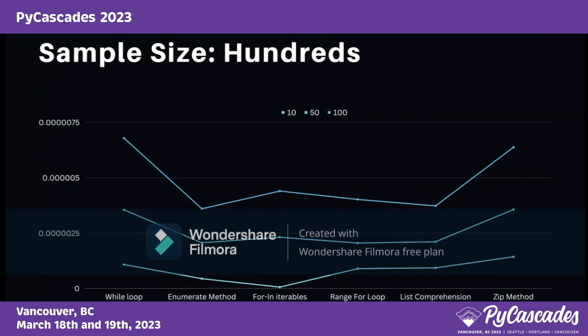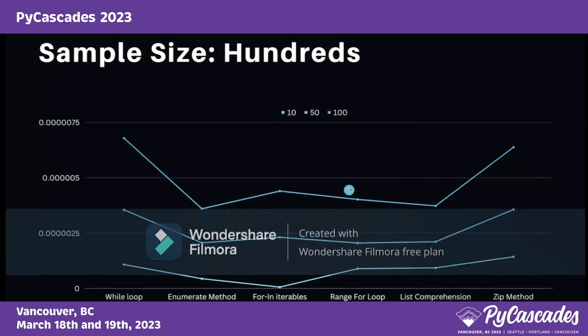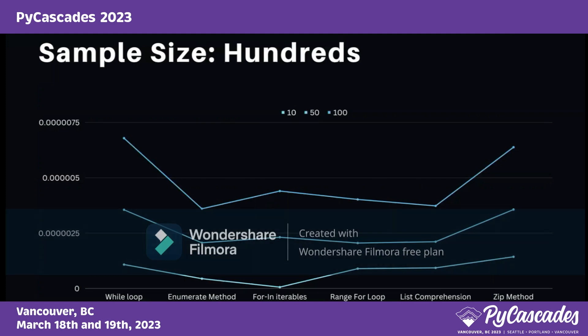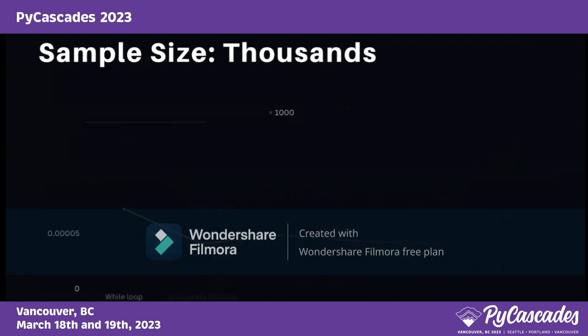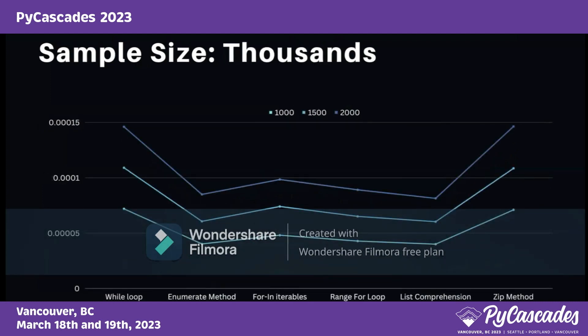Looking at range for loops, the curves are pretty similar — the slopes are not as steep compared to other loops. For list comprehension and zip methods, zip shows a lot of complexity with many calculations behind the scenes, making it more time-consuming. List comprehension is a moderate-sized looping mechanism. When we scale up, all of these trends become much more apparent, more similar, and more consistent.